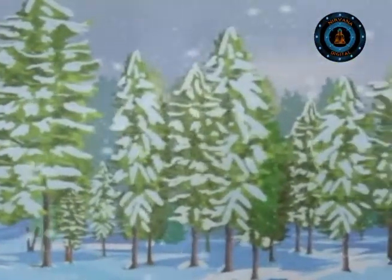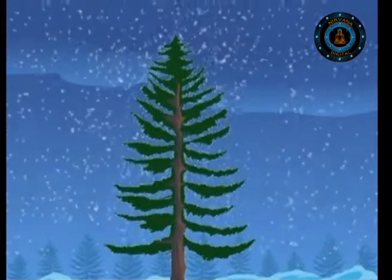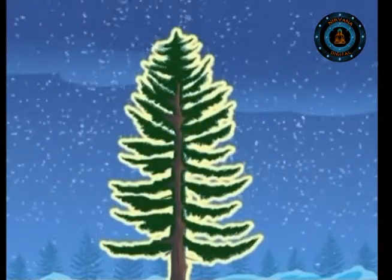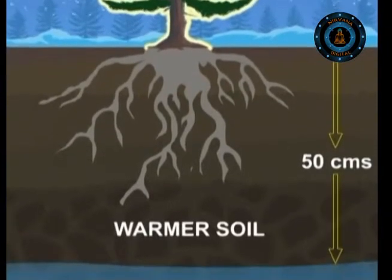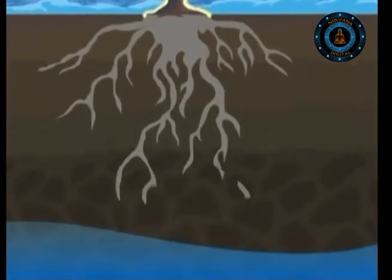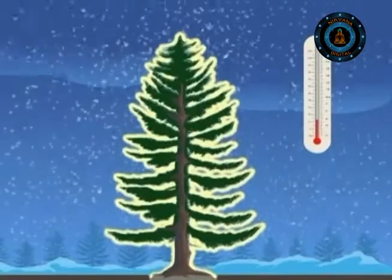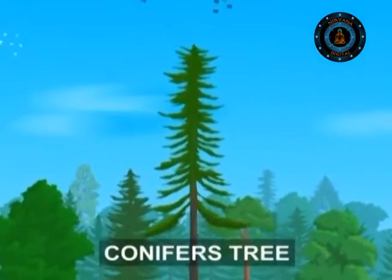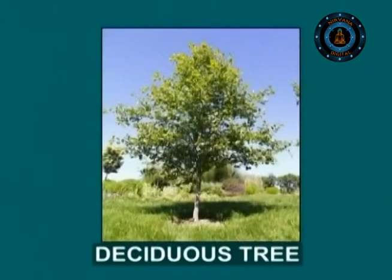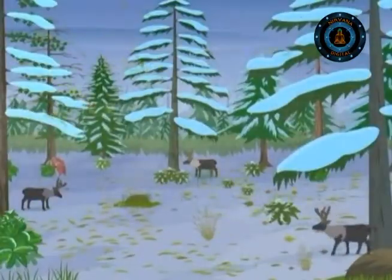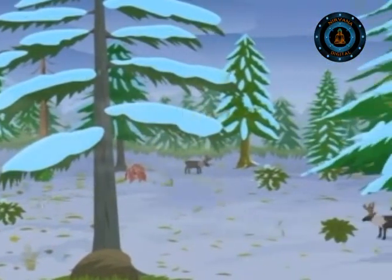Taiga may be cold for most of the year, but the presence of snow benefits the plants. The snow acts like a fluffy, air-filled jacket, insulating the trees and soil from the cold, bitter air. In winter, the soil at a depth of 50 cm can be much warmer than the air above. At this depth, the tree roots are able to take life-giving water even if the temperature above the ground is below freezing point. There is plenty of water, but it is frozen, so the plants have to bear water shortage like that in the desert.